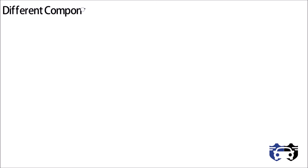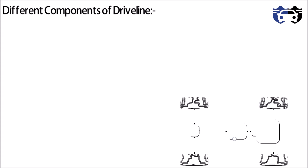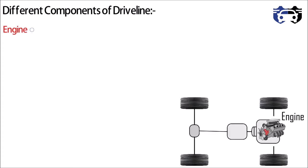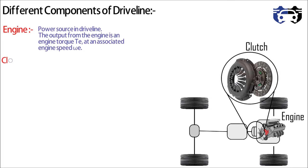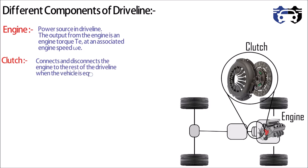Before understanding efficiency, let's understand the different components involved in the driveline. The first component is the engine — it is the power source in the driveline. The output from the engine is engine torque Te at an associated engine speed omega_e. Second is the clutch — it connects and disconnects the engine to the rest of the driveline when the vehicle is equipped with a manual gearbox.